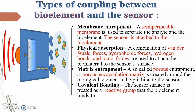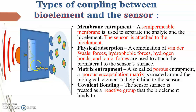Types of coupling between the bioelement and the sensor: we have membrane entrapment, physical absorption, matrix entrapment, and covalent bonding. In membrane entrapment, a semi-permeable membrane separates the analyte and the bioelement. Physical absorption is used to attach the biomaterial to the sensor. Matrix entrapment, also called porous entrapment, creates a porous encapsulation matrix around the biological element to help bind the sensor. In covalent bonding, the sensor has a reactive group so that it can bind the bioelement.